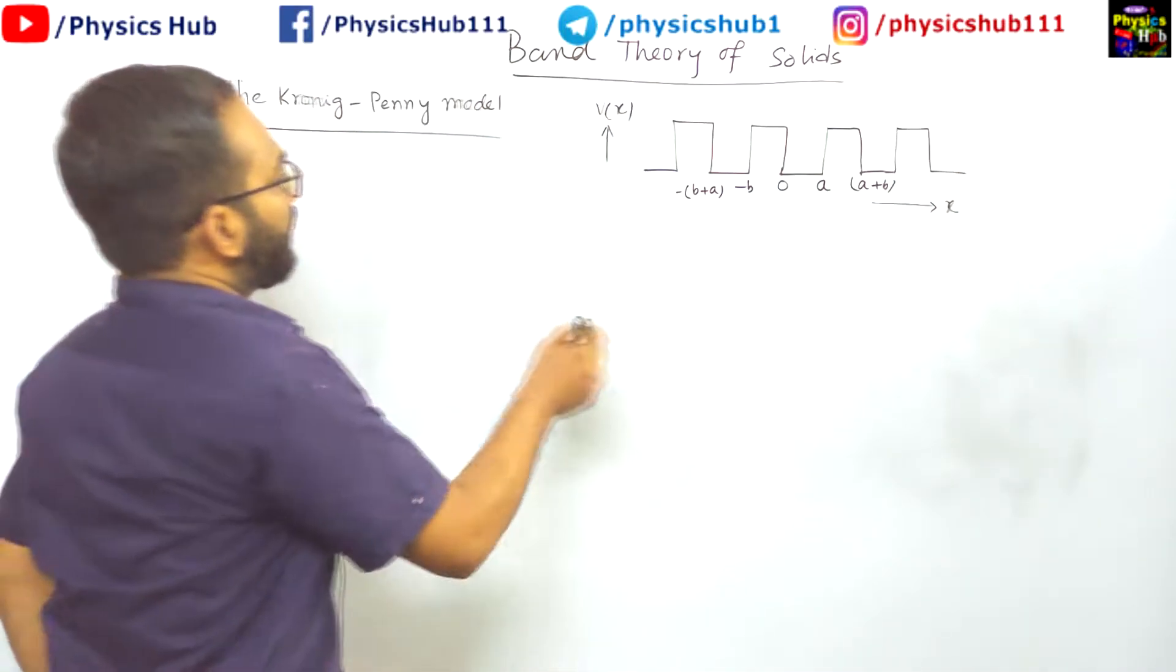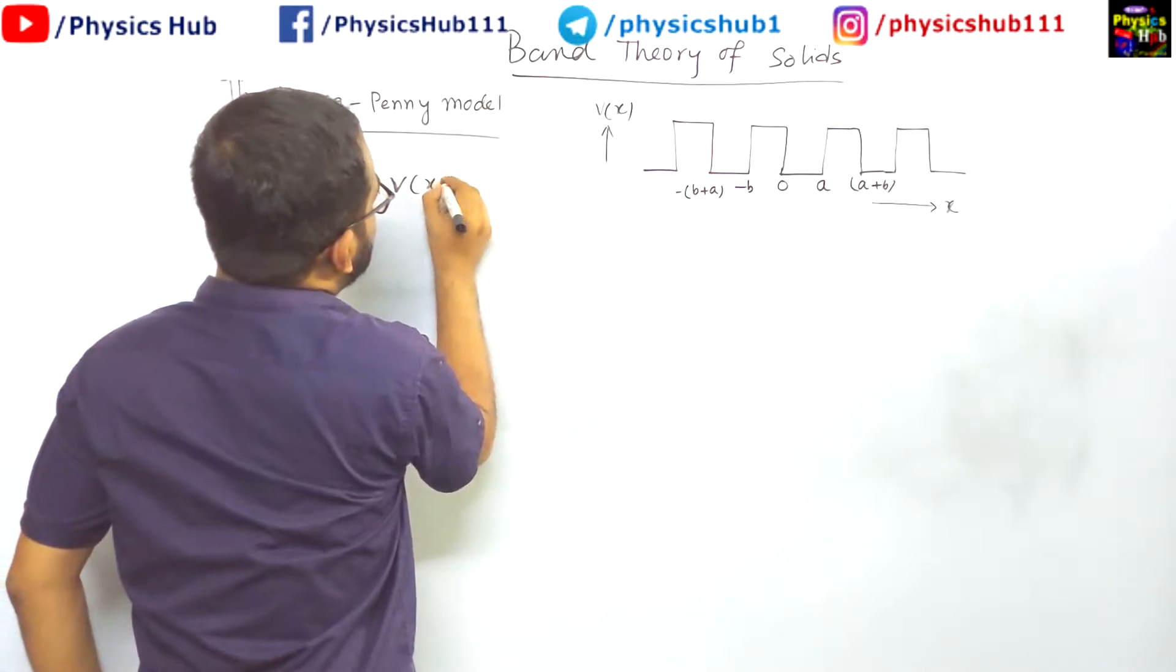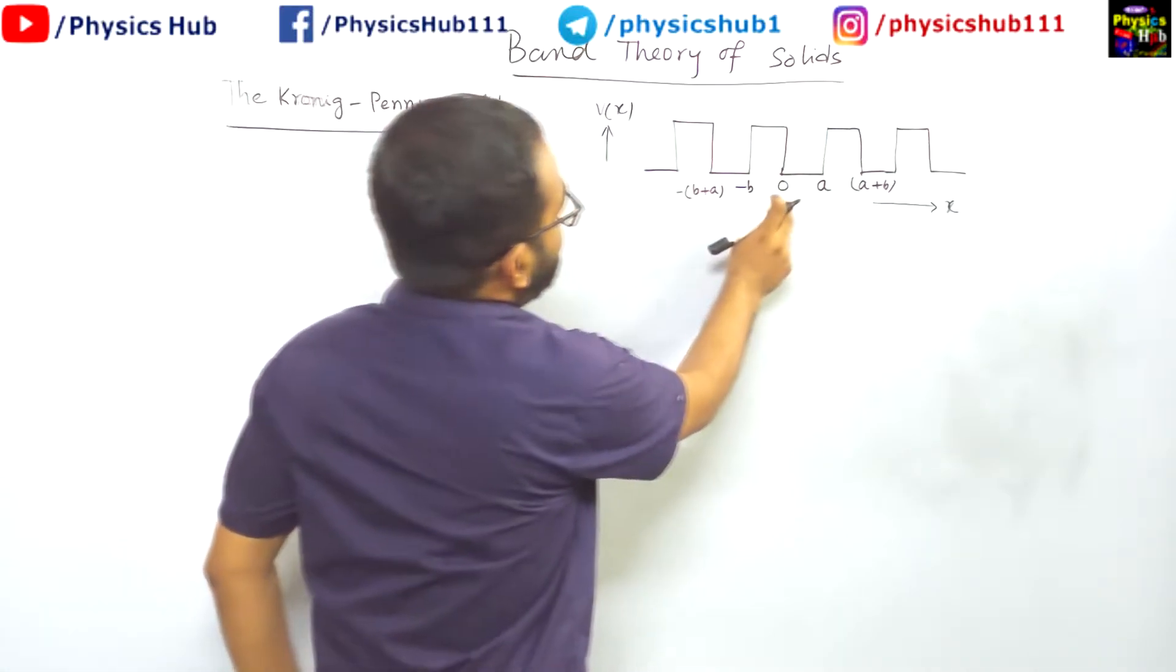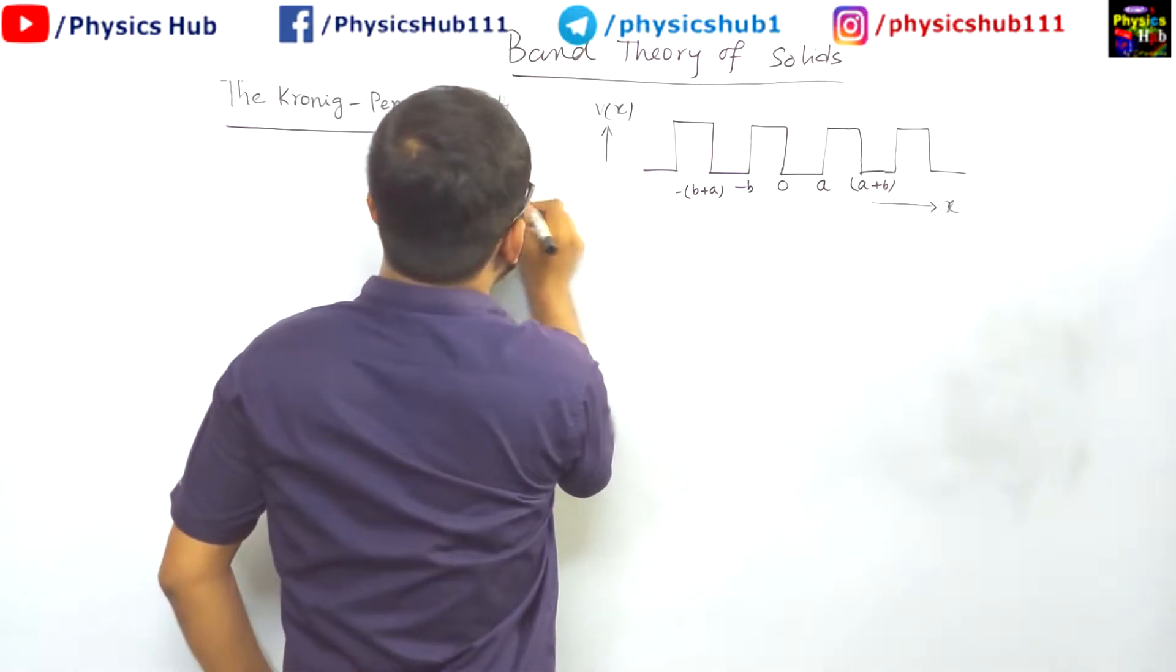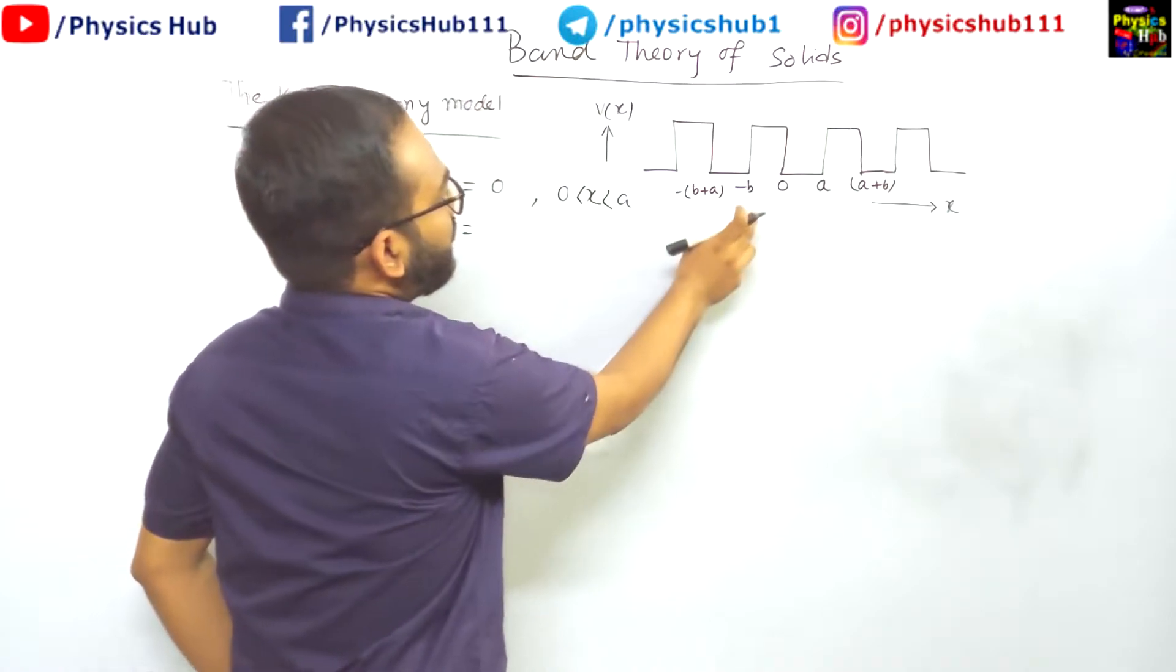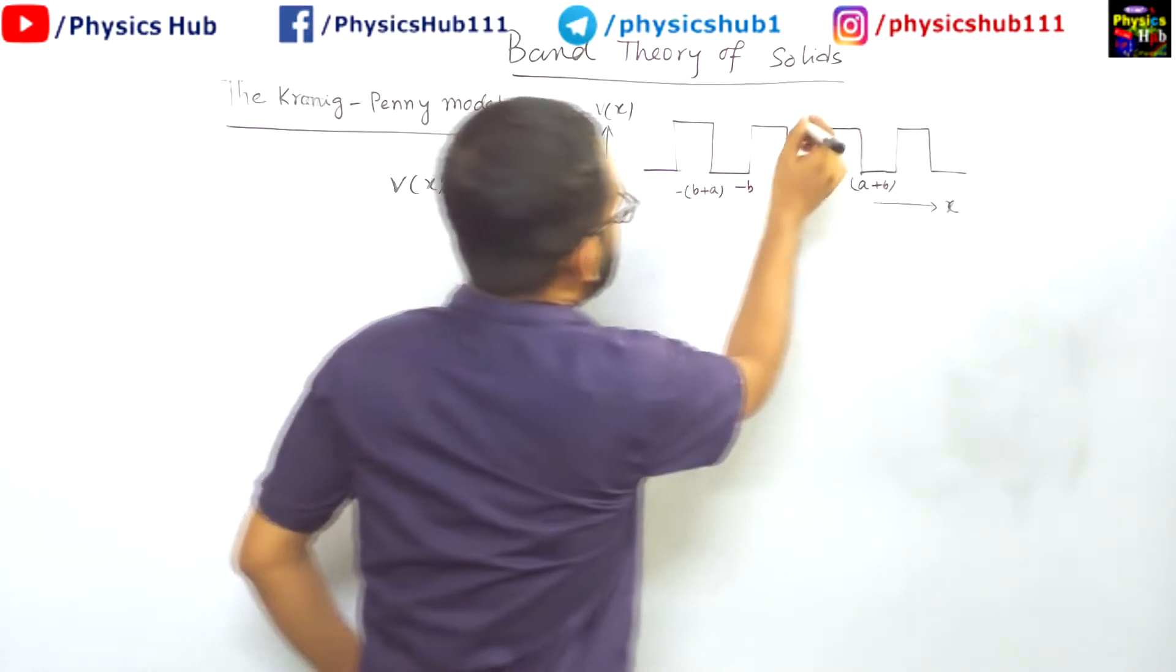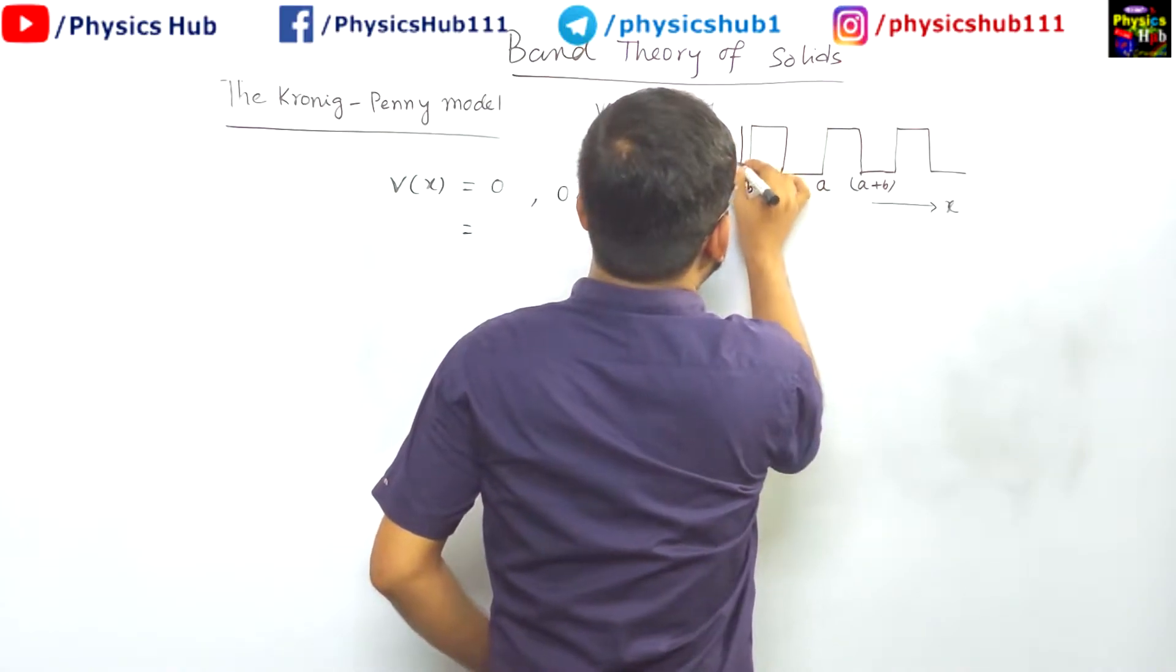So we can represent this potential v of x. This is square well potential v of x. How can you write between 0 to a, it is 0, 0 less than x less than a and between minus b to 0, the potential is v0.